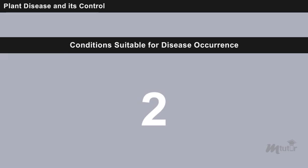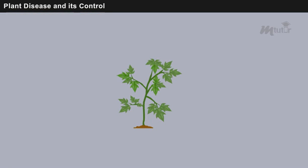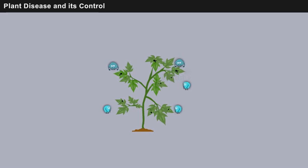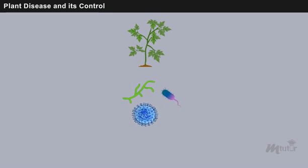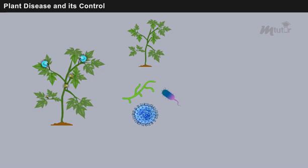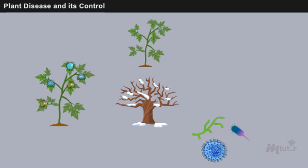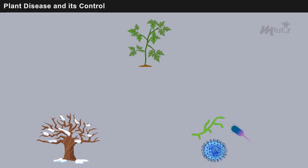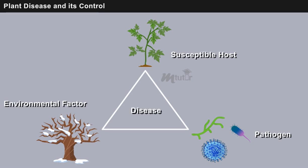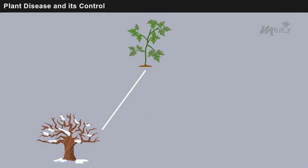Three conditions are necessary for disease to appear. First, it is necessary to have a susceptible host plant in a stage of development susceptible to infection by the disease agent. Second, the pathogen must be present and in a stage of development conducive to infect the host plant. Third, the environment must be suitable for the pathogen to cause disease. The interaction of host, pathogen, and environment can be represented by a triangle. The disease triangle cannot be constructed unless all three legs are present simultaneously, and a breakage in any one leg will hinder the occurrence of disease.